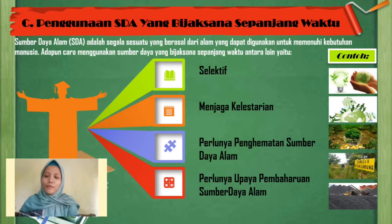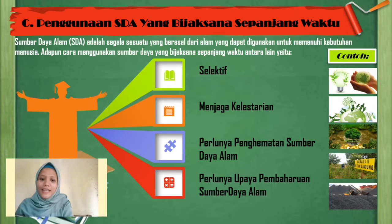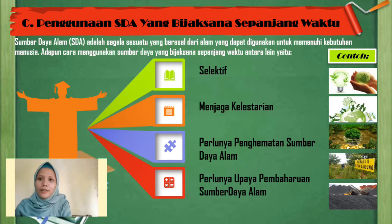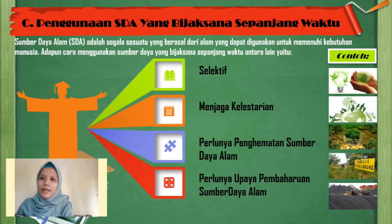We must also prevent the destruction of natural resources by unauthorized parties, build protected forests to prevent flooding and erosion, and maintain soil fertility. Finally, we must not take natural resources excessively or illegally.